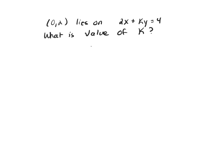We are trying to figure out the value of k, and we're given this equation: 2x plus ky equals 4, and we're given this ordered pair (x, y) as (0, 2).